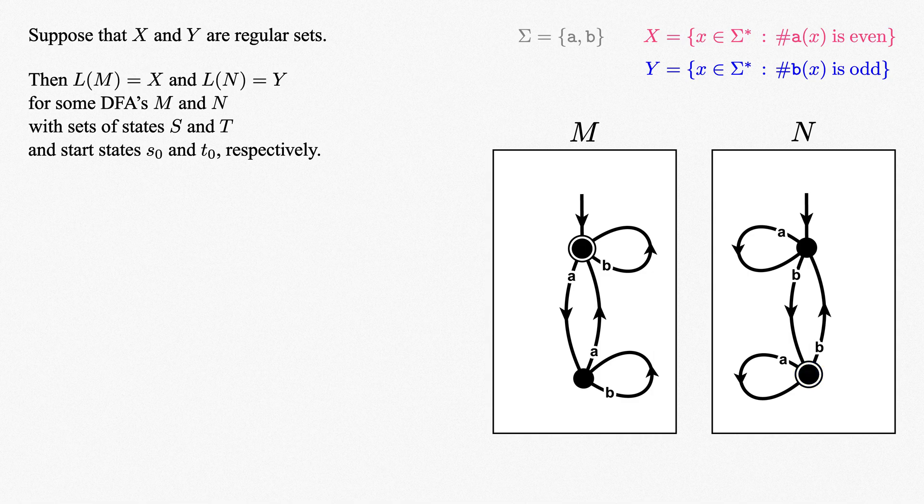Be sure to convince yourself that these two DFAs accept x and y respectively. But remember, these could have been any two DFAs accepting whatever two regular sets x and y we were given, and over any alphabet sigma.